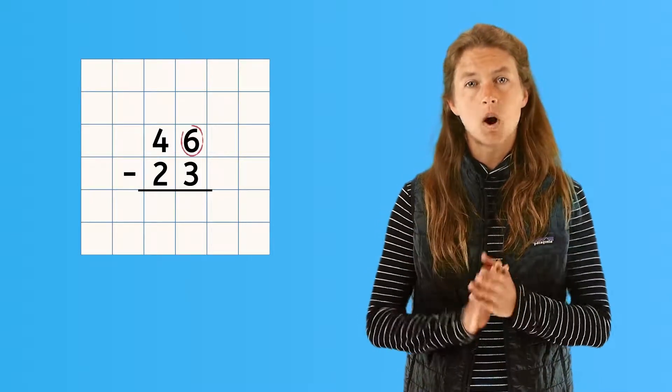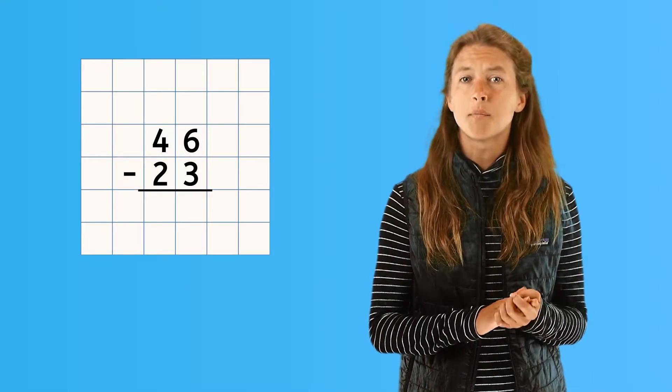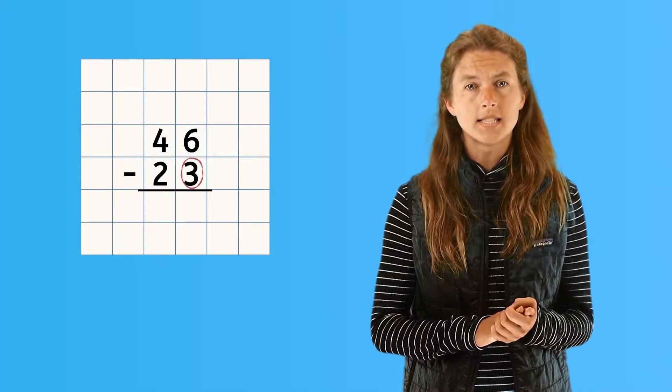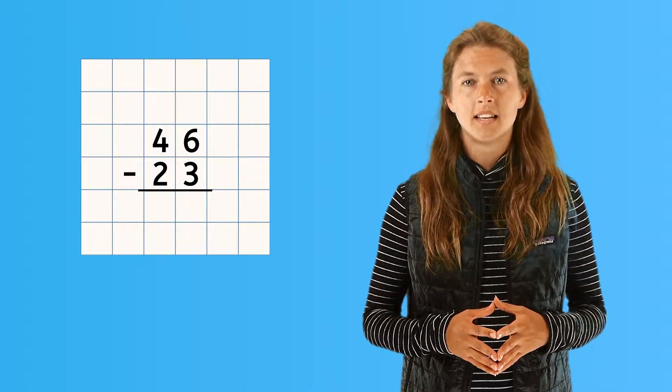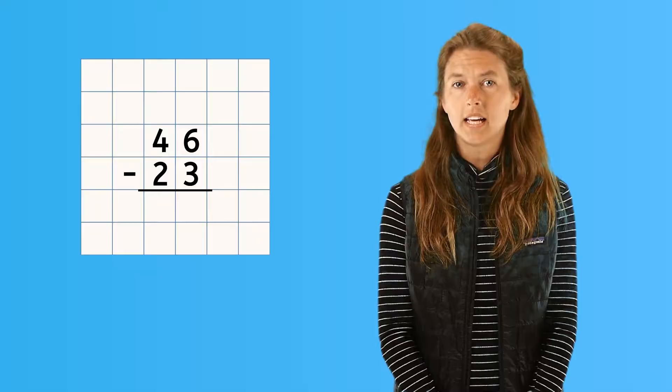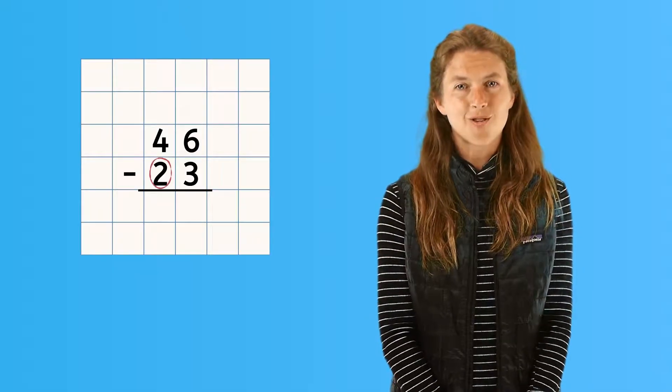Notice the six ones from 46 is lined up perfectly with the three ones in 23. The same can be seen with the tens place. The four tens, or 40, is lined up with the two tens, or 20.